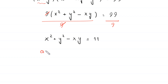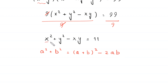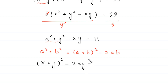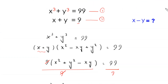Now by using the algebraic identity a squared plus b squared equals a plus b whole squared minus 2ab, this x squared plus y squared can be written as x plus y whole squared minus 2xy. So the equation becomes x plus y whole squared minus 2xy minus xy is equal to 11.